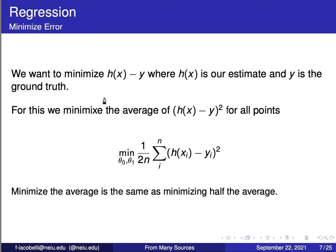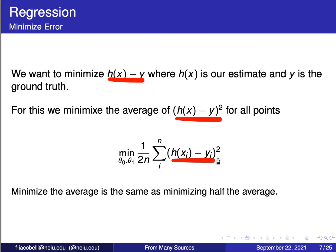We want to minimize this error — the distance between the predicted value and the ground truth. To get positive values, we minimize the square of this distance. The total error is the squared distance from every point x to y, averaged by dividing by the number of points n. So it's a summation from 1 to n of the distance squares, divided by n. That's the average.